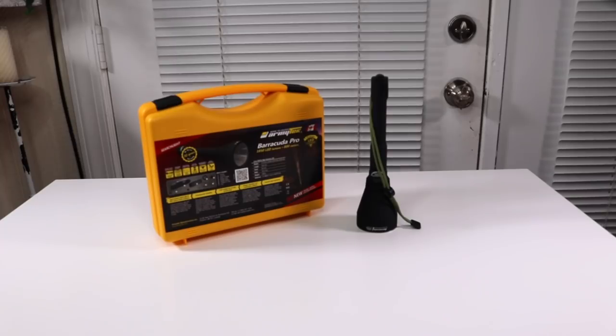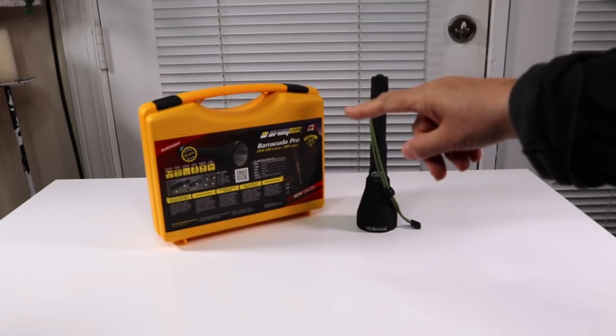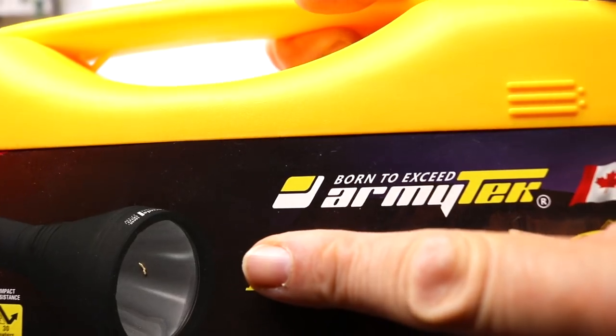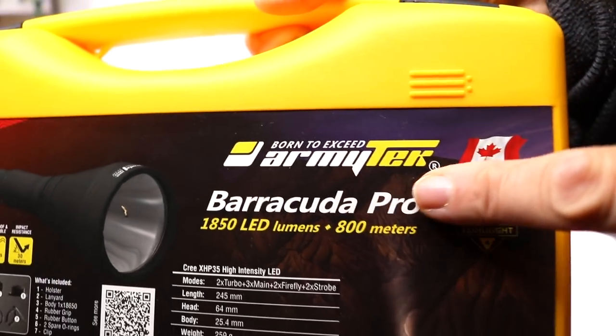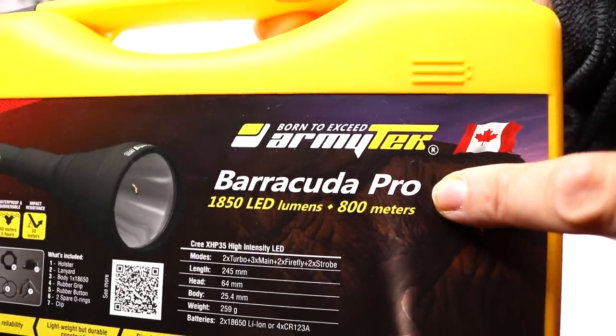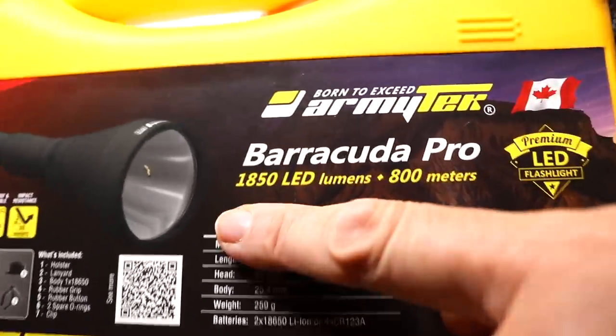I have a new item to show you today. This is a flashlight, so let's take a look at the box. This is the name of the company that makes this flashlight: Armytek, and this is their Barracuda Pro.